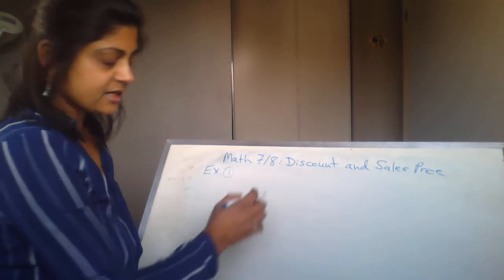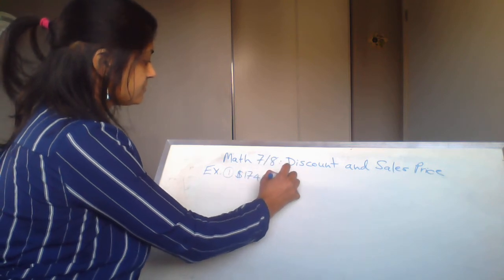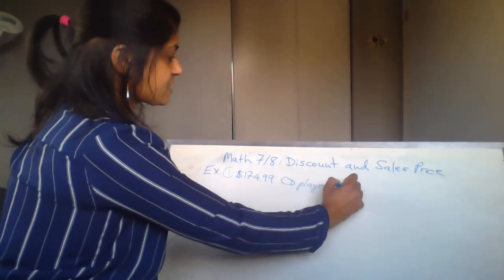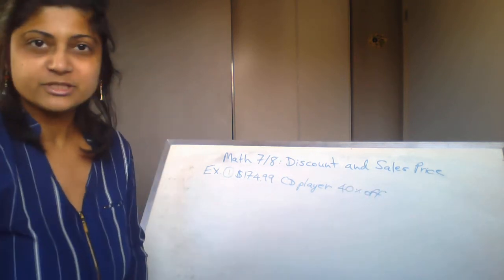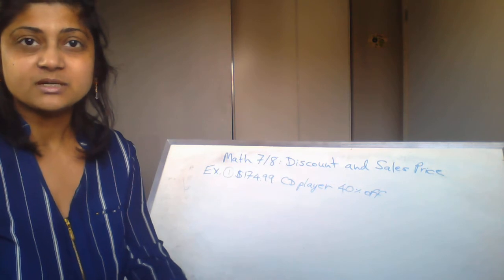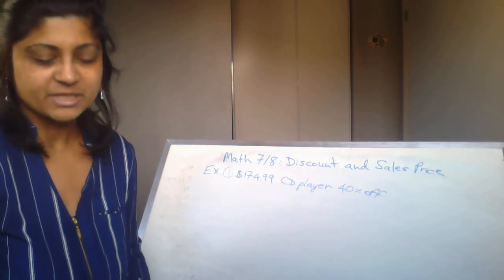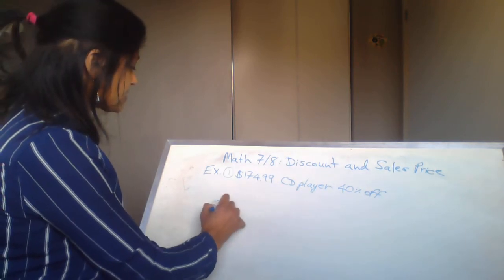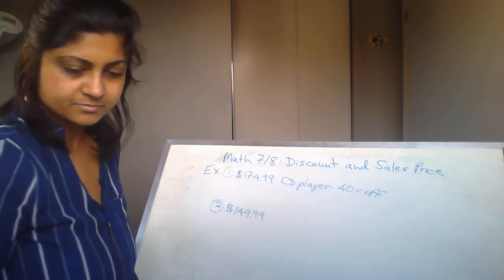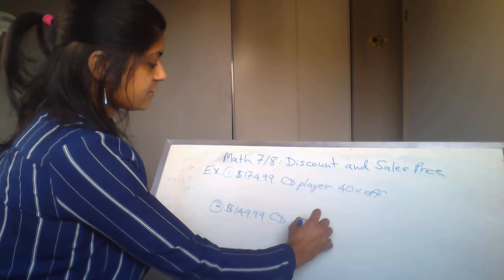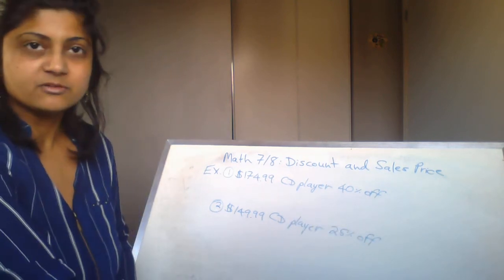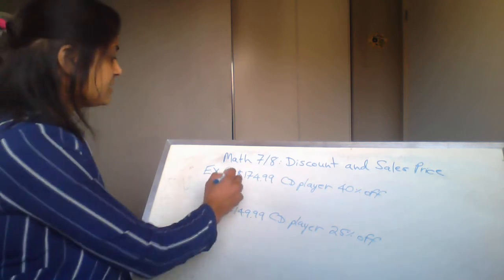Let's write it down. The first CD player is $174.99 and it's 40% off. The second CD player is $149.99 and it's 25% off. This is a really good question because sometimes you see products at different stores with different percentage discounts, and you should be comparison shopping to see which one is cheaper.